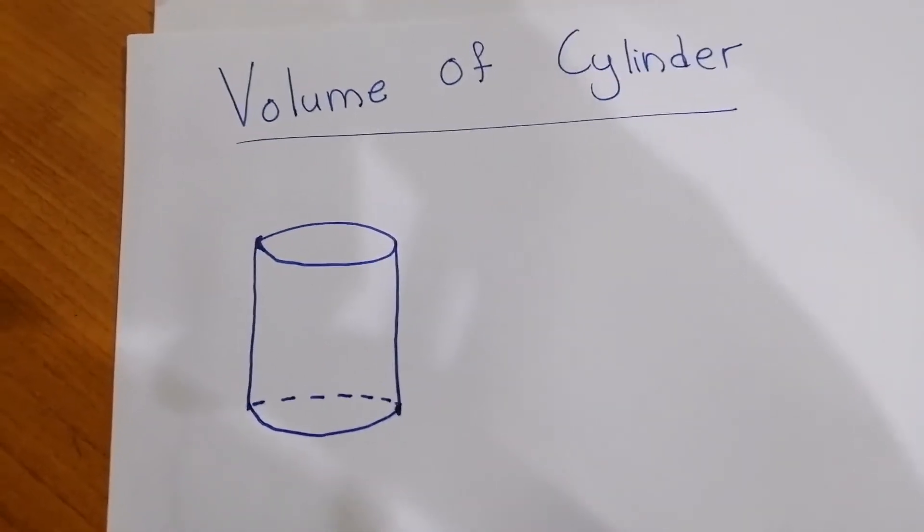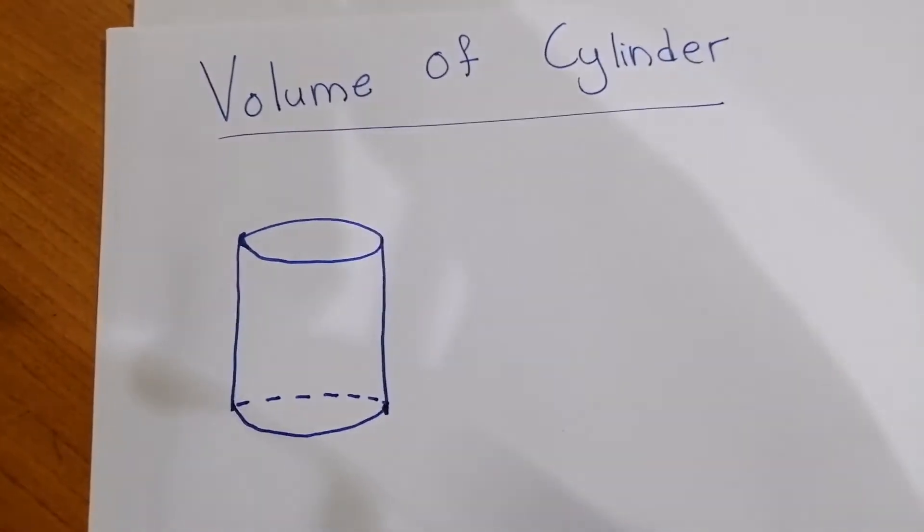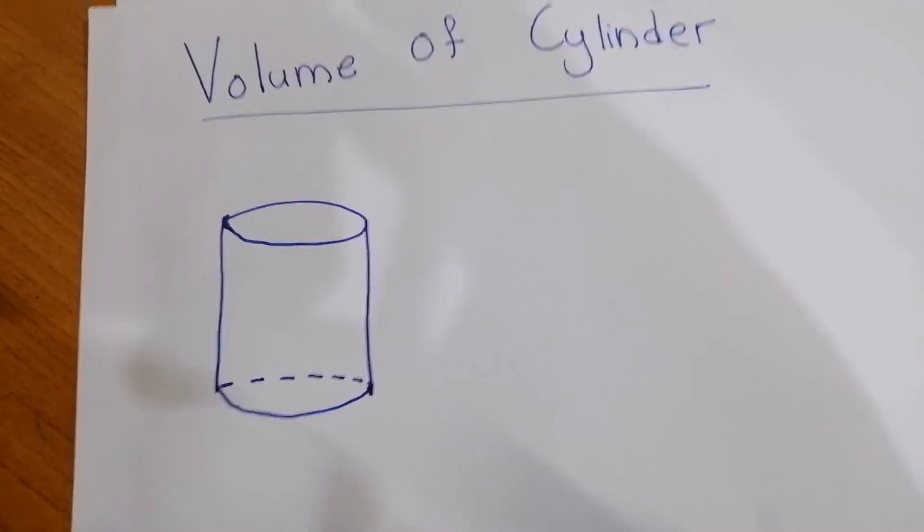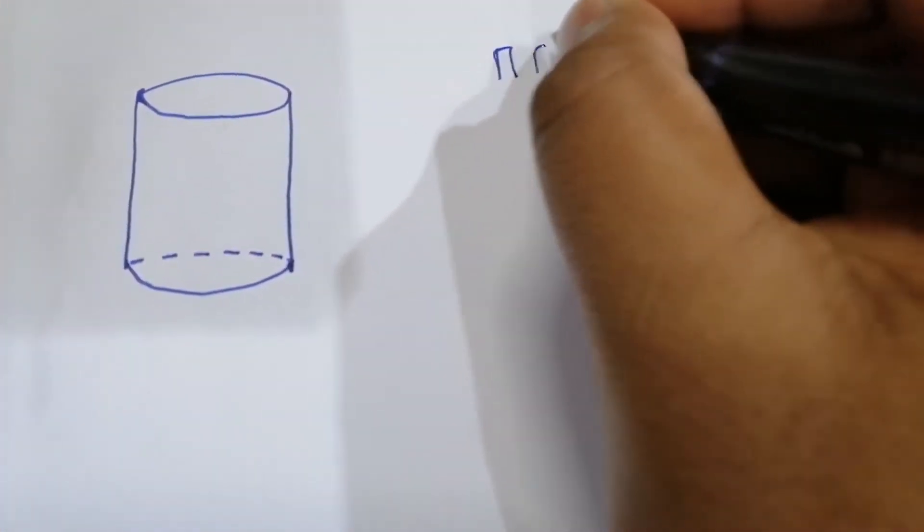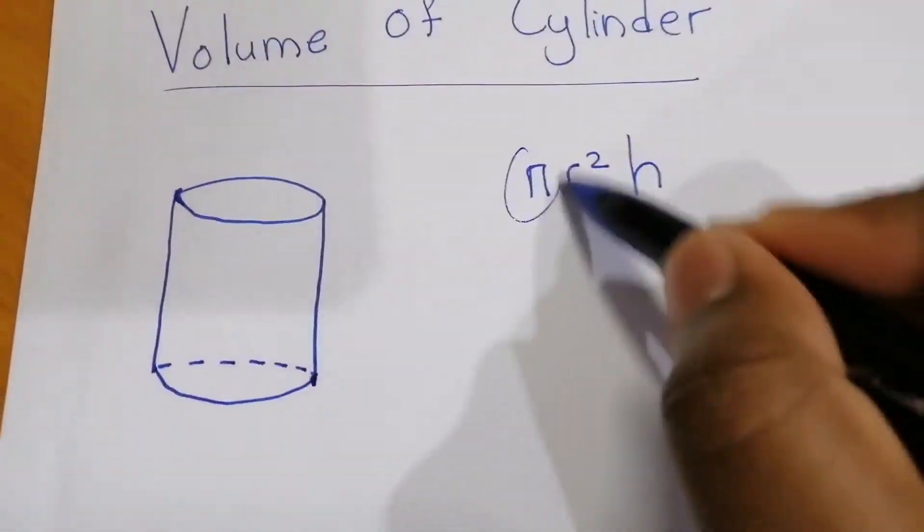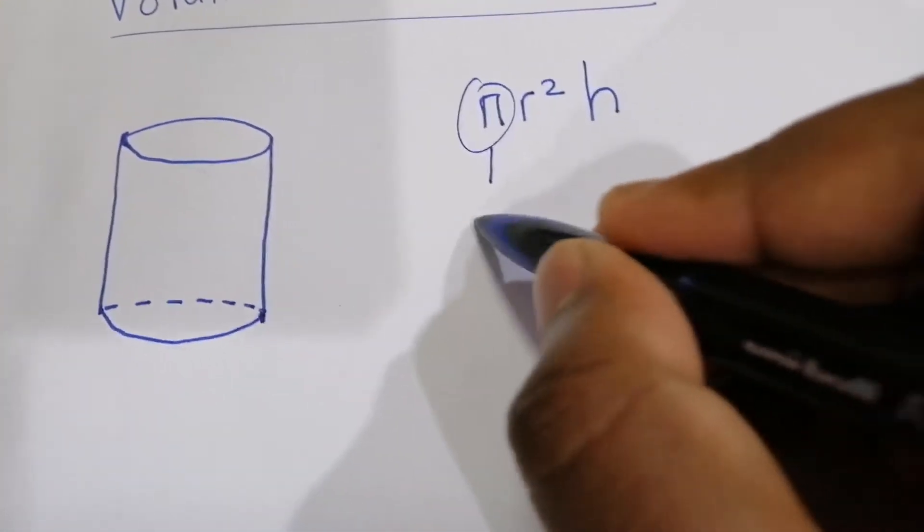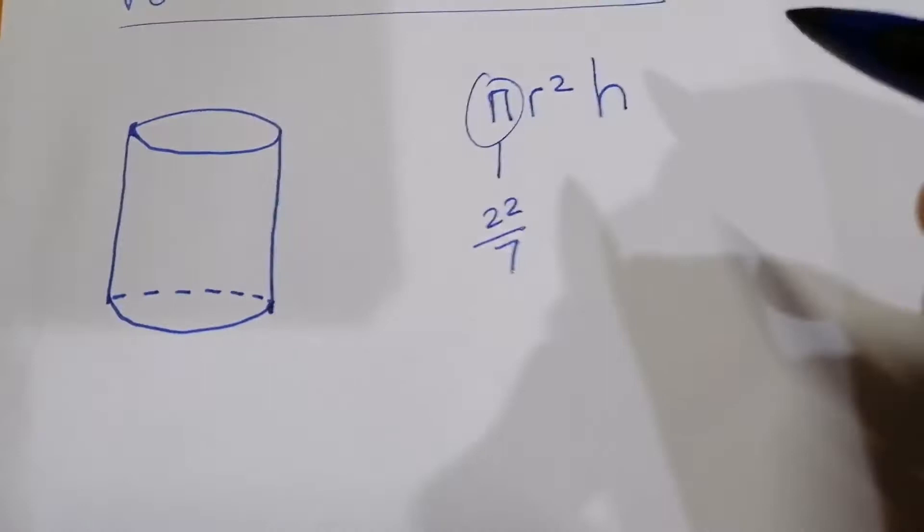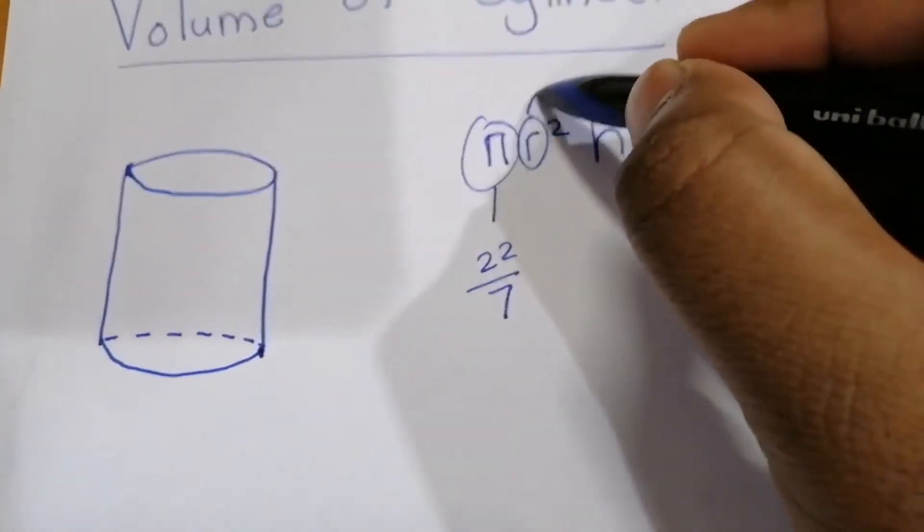Today we want to study how to calculate the volume of a cylinder. There is a formula: π r² h, where π equals 22/7 and r equals radius.